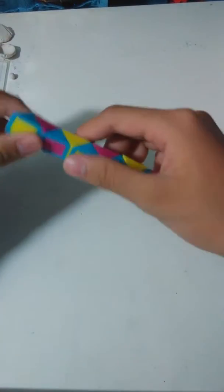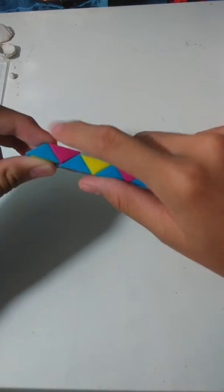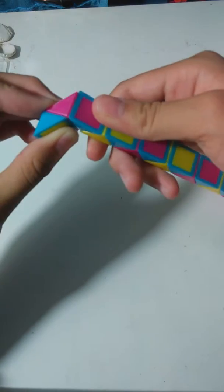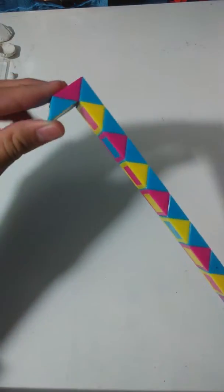The first step is to take this side and you're going to twist it twice so that it becomes like this, and this is going to be the head.